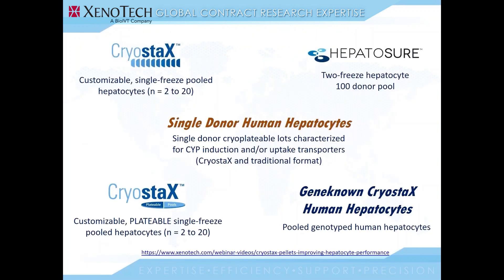I also want to mention that at Sekisui Xenotech we offer the full gamut of hepatocytes. We can offer fresh or cryopreserved cells, animal and human hepatocytes, and our most popular hepatocytes are our cryopreserved cells. We have pooled suspension and platable cells in our Cryostax format. We also have genotyped donors with known SNPs that lead to altered functional activity of various CYPs involved in xenobiotic metabolism. Our Cryostax format is patented and unique to Sekisui Xenotech. We also have Hepatosure, which is a 100-donor suspension pool in the traditional format, and we offer individual human donor hepatocytes in both traditional format and individual donor Cryostax format.